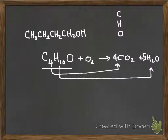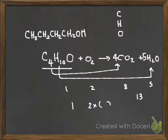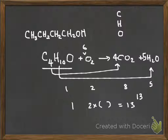Now I balance the oxygens. I have 1 oxygen in the alcohol. In the CO₂ I have 8, and in the H₂O I have 5, so I have 13 on the right. I have 1 here plus 2 times a number — that gives me the coefficient for oxygen: I need 6. This is a trick for balancing hydrocarbons or alcohols — much easier than adding things up over and over.